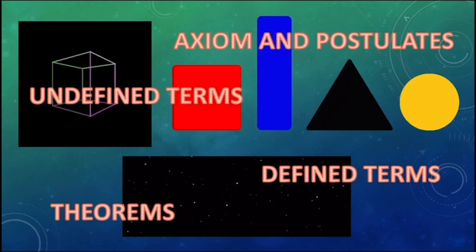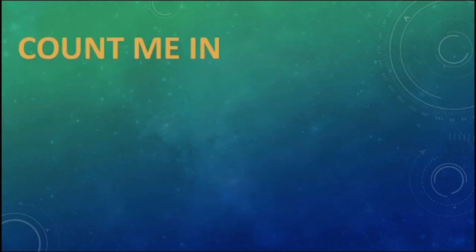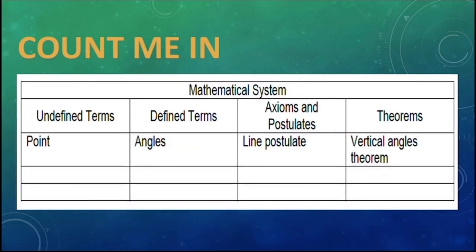For our first activity, we have Count Me In. You just recall the lessons on describing mathematical systems. Complete the table below with the following columns: undefined terms, defined terms, axioms and postulates, and theorems. I will give you one minute to answer the missing parts.